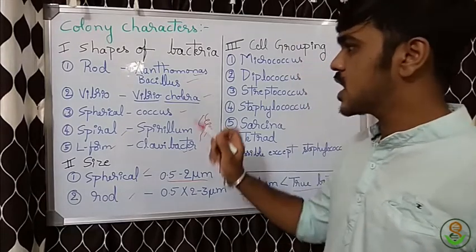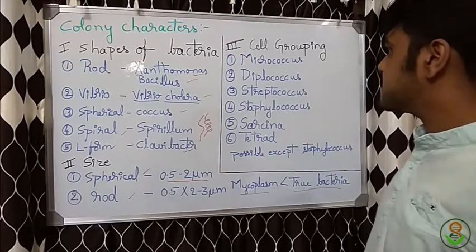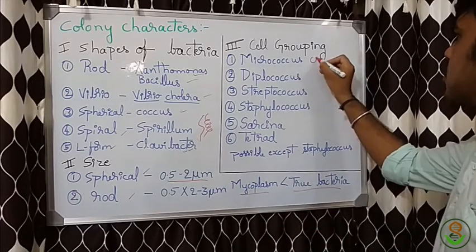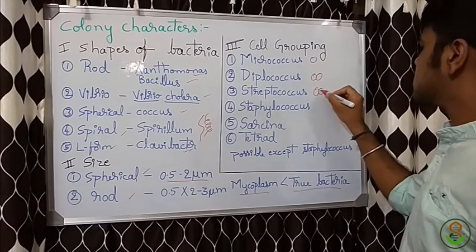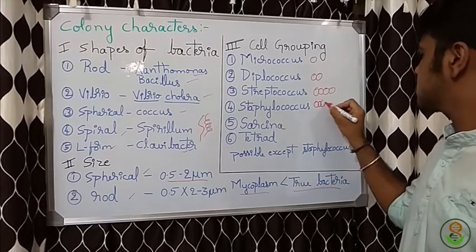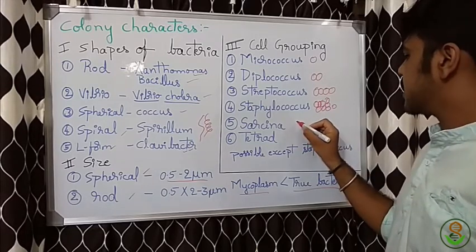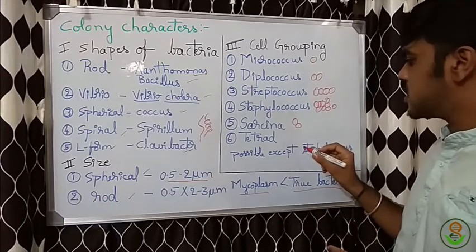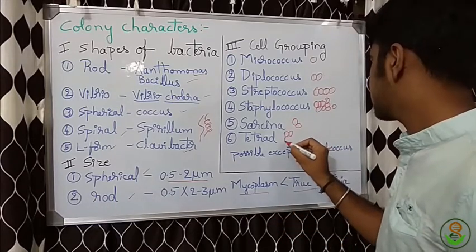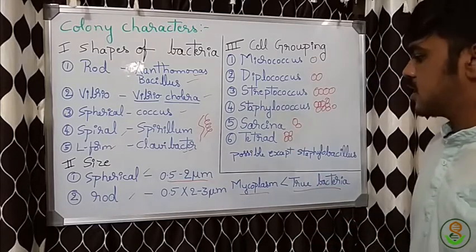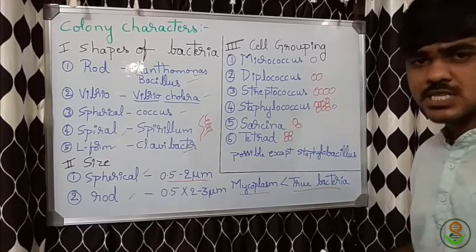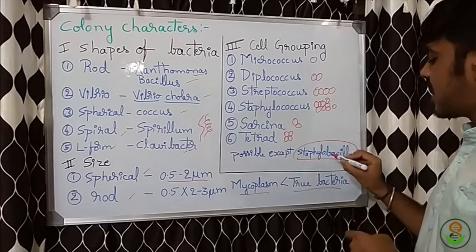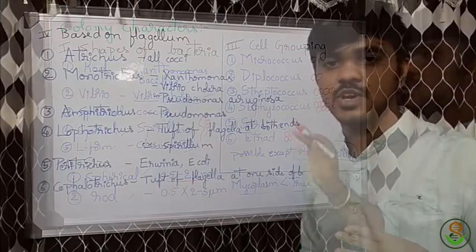Based on cell grouping: micrococcus, diplococcus, streptococcus, staphylococcus, sarsina, and tetrad. Micrococcus is a single coccus; diplococcus is two together; streptococcus is a chain formation; staphylococcus is a cluster formation. Sarsina involves cells perpendicular to each other. The tetrad arrangement is best possible in the coccus condition, but in the bacillus condition it cannot be done — staphylococcus grouping also cannot be formed in bacillus.